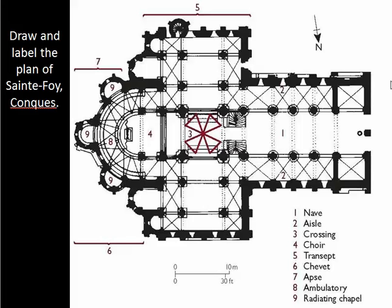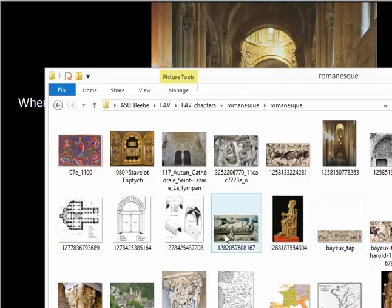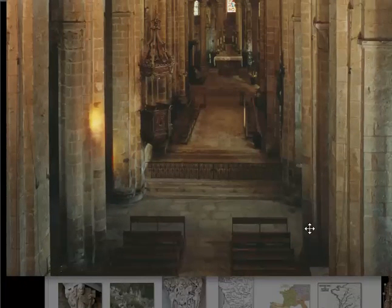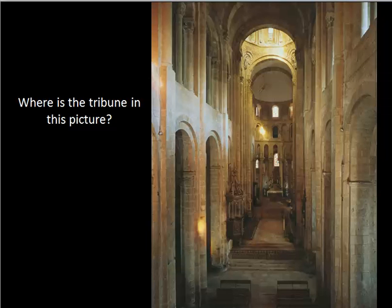You have the choir, you have a priest giving a sermon, singing this beautiful music, and because of the stone vaults it becomes this otherworldly, incredible experience. When looking at this picture, where is the tribune? The tribune, of course, is on the second floor. I wanted you to see this in context so you could better appreciate the size of this space. Those are the benches, there's the altar, and of course the crossing. It is a massive space, and one can feel incredibly small before those arches and other features.